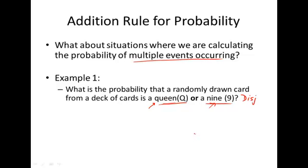When two events are disjoint, all we have to do is add their probabilities. What is the probability of selecting a queen from the deck? That's 4 out of 52, or 1 thirteenth. What is the probability of selecting a 9 from the deck? Same thing, 1 thirteenth.